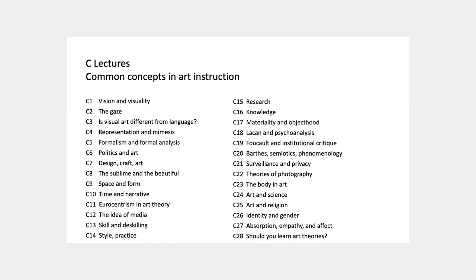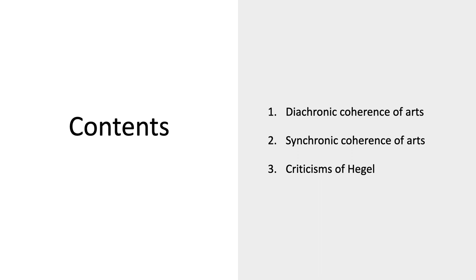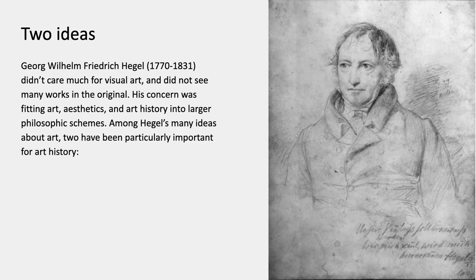Welcome to Theories and Problems in Visual Art. This is Lecture 17 in the History Series on Hegel and his ideas about history and art. I'm only going to talk about two ideas of Hegel's: the diachronic and the synchronic coherence of art, which I'll define one after the other, and then a little bit about criticisms of Hegel and attempts to escape from Hegel.